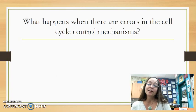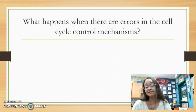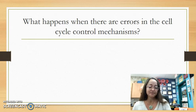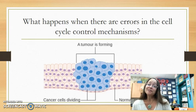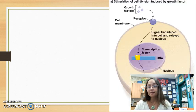In this video we're going to look at what happens when there are errors in the cell cycle's control mechanisms, which leads to — if the cell cycle is malfunctioning — uncontrolled cell growth.